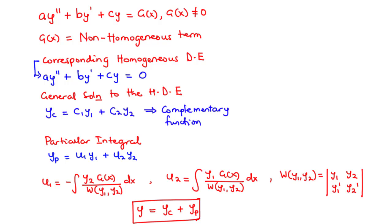In this lesson, we are going to learn how to solve second-order linear non-homogeneous differential equations with constant coefficients using the method of variation of parameters. The method of variation of parameters allows us to find the particular integral of a wider range of differential equations, especially in cases where the method of undetermined coefficients cannot solve.